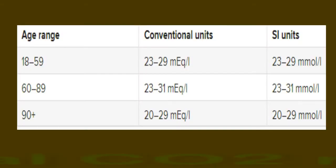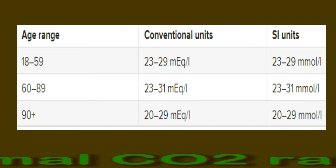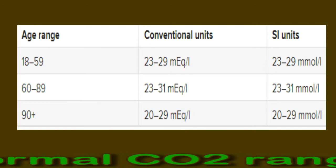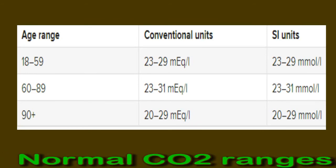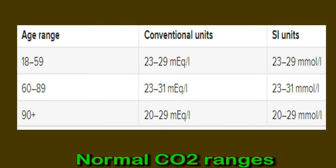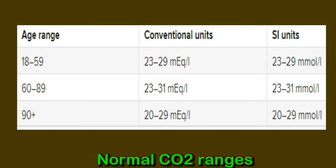Both arterial and venous blood draws can provide an overall picture of a person's electrolyte status and the balance of acids and bases in their blood. Normal carbon dioxide ranges: results of the carbon dioxide test may vary depending on the person's age, sex, and medical history, as well as the test administration method and whether the person takes any type of medication. The American Association of Clinical Chemistry reports the normal ranges of total blood carbon dioxide, which you can see on the screen. Measurements are in milliequivalents per liter for conventional units and millimoles per liter for SI units.